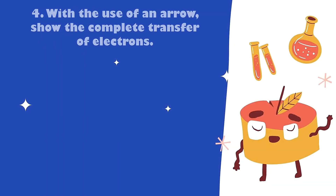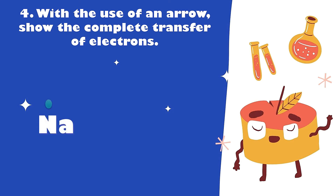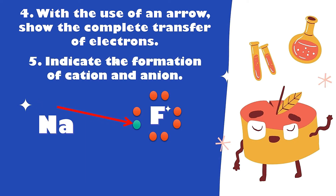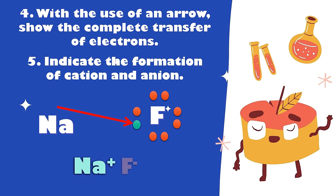Fourth, with the use of an arrow, show the complete transfer of electrons. Let's show again the Lewis dot structures of sodium and fluorine, then use an arrow to show the complete transfer. Lastly, indicate the formation of cation and anion. What element has a positive charge? Very good — it's sodium. How about the negative charge? Very good — it's fluorine.